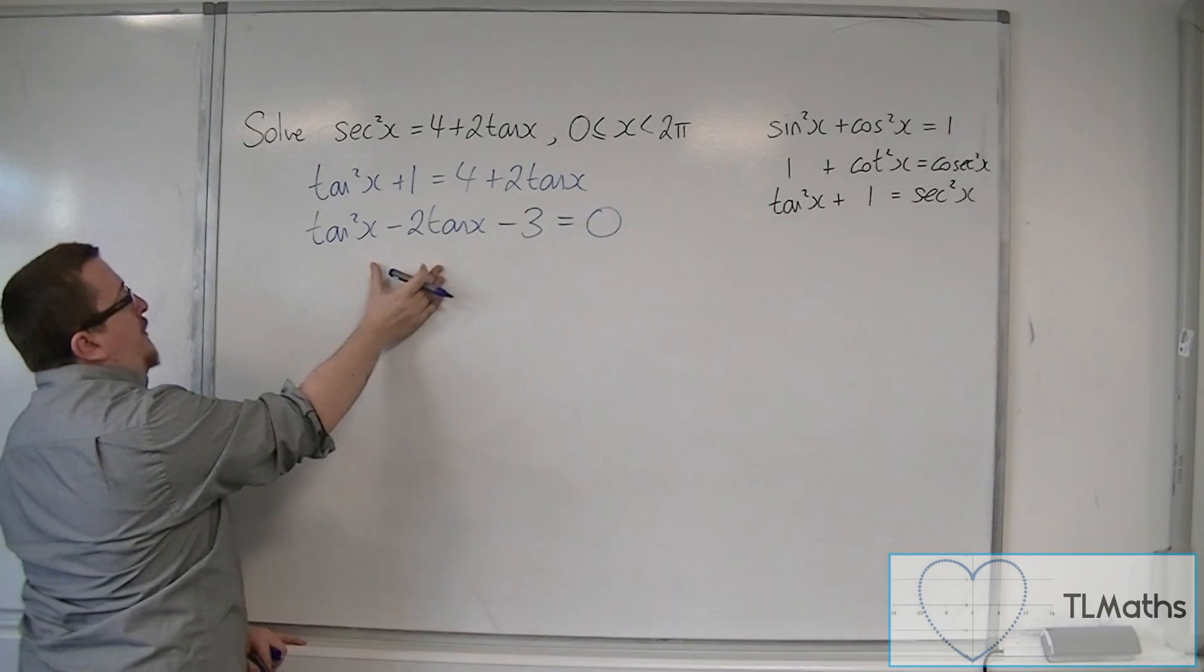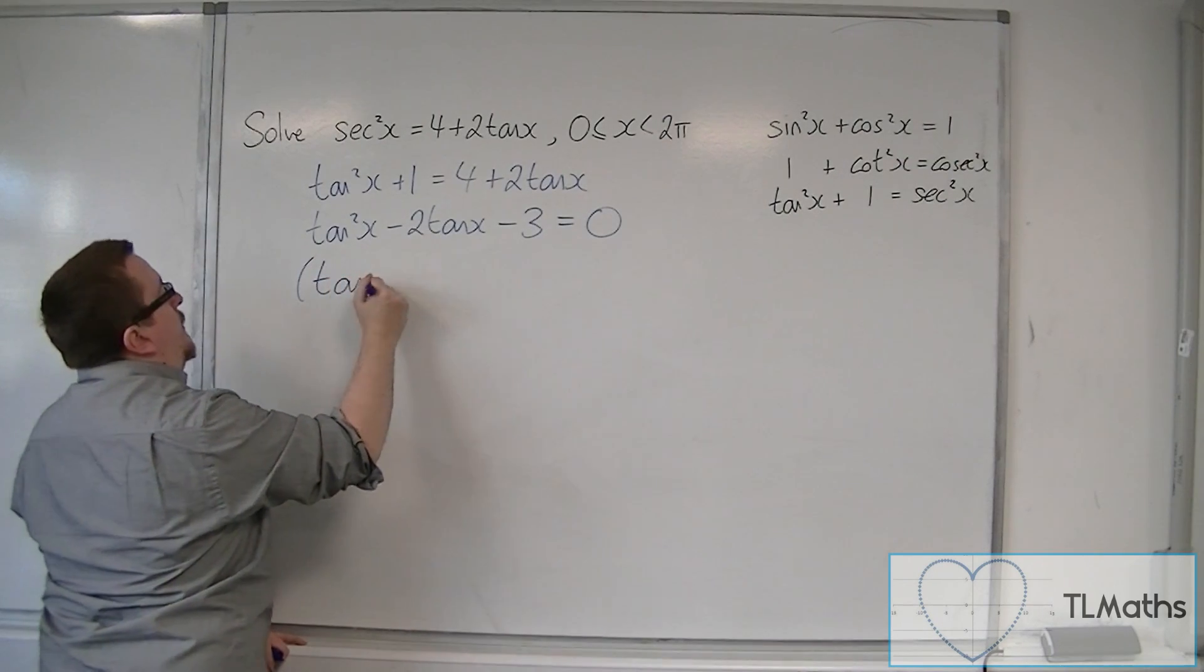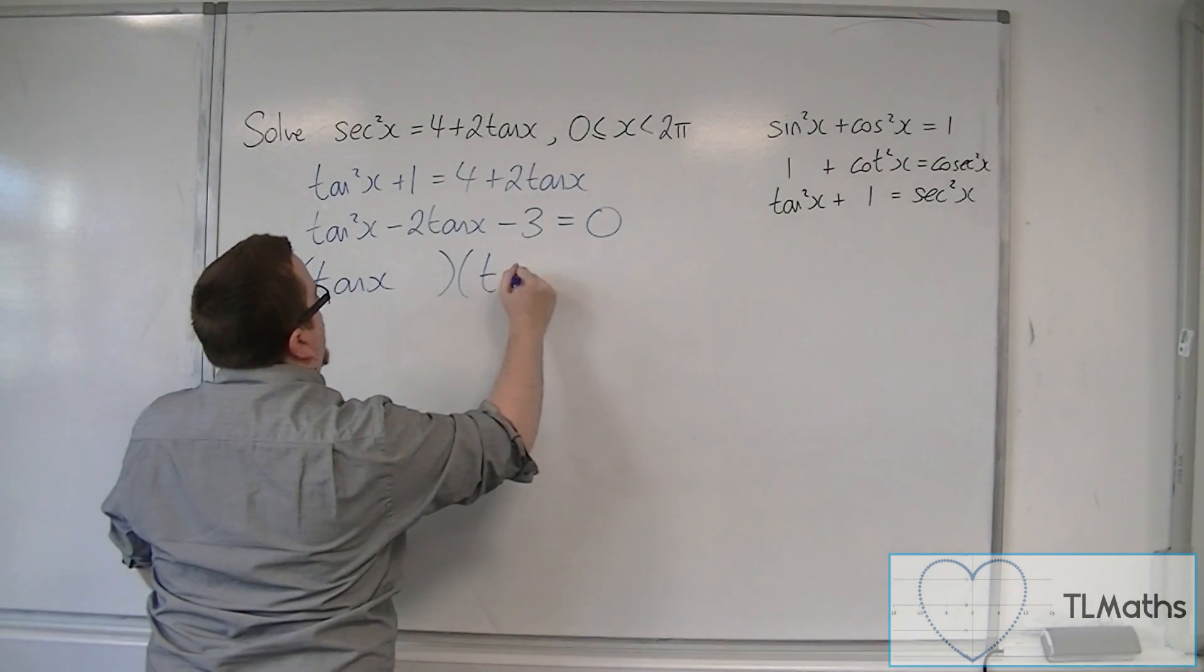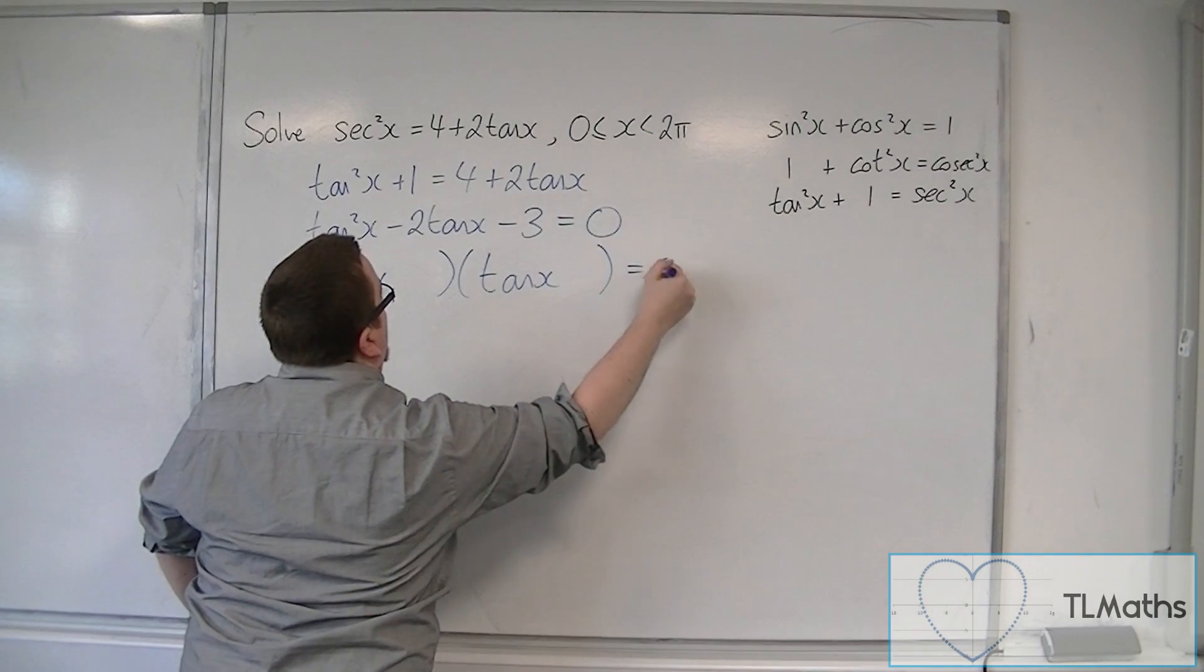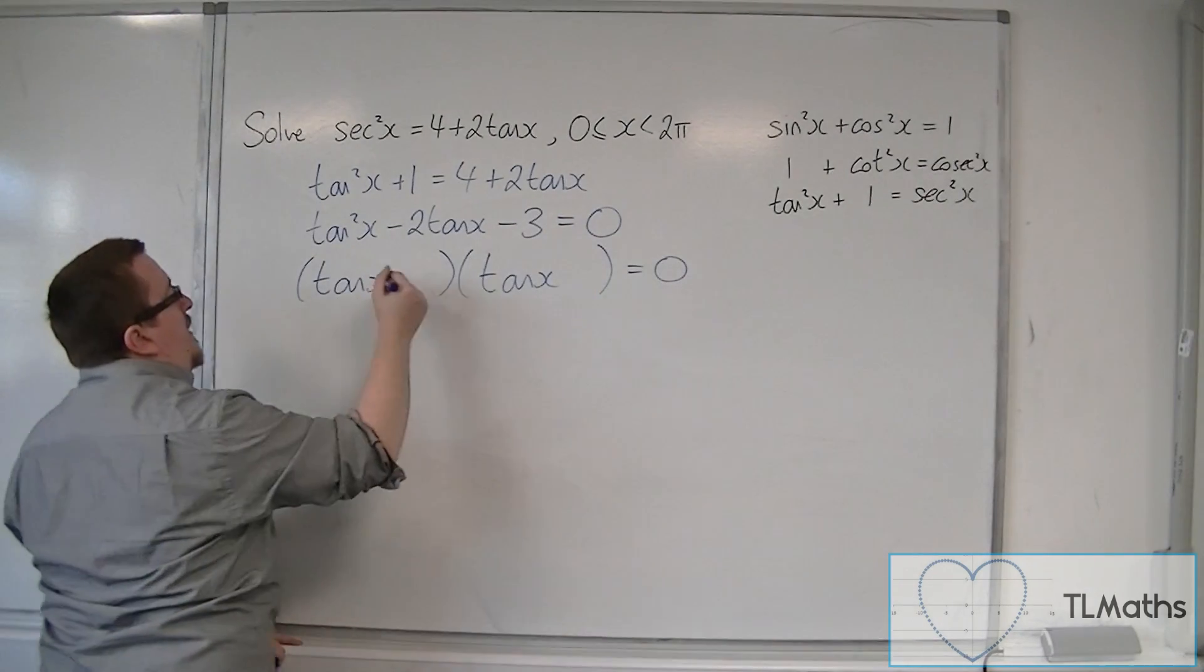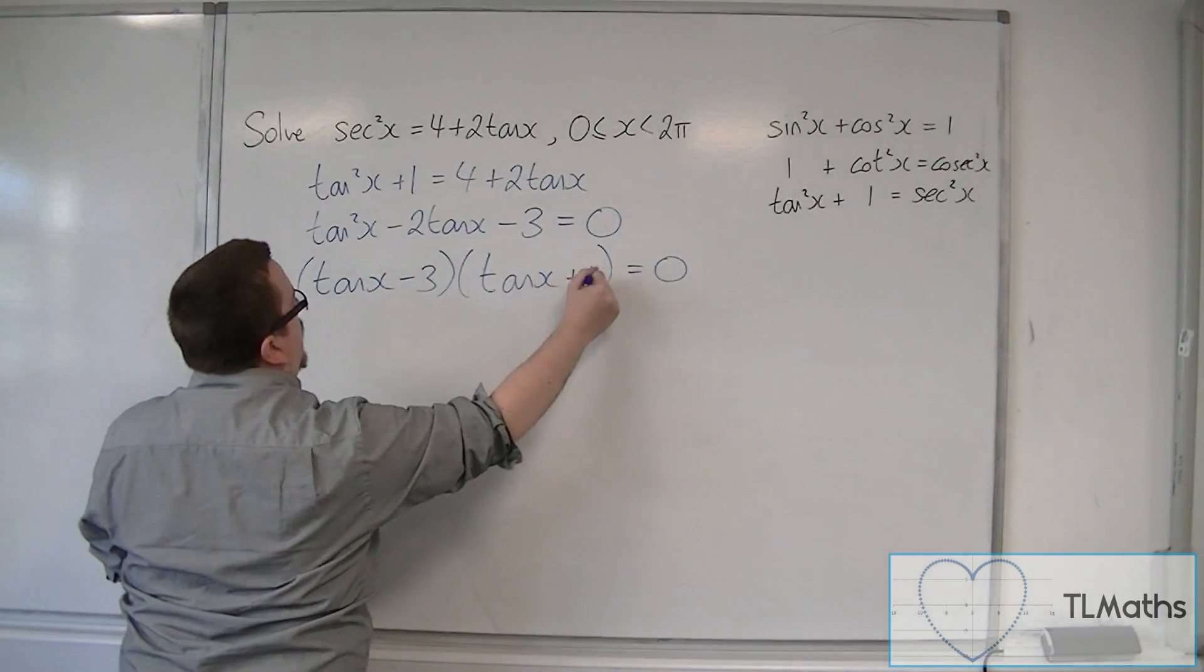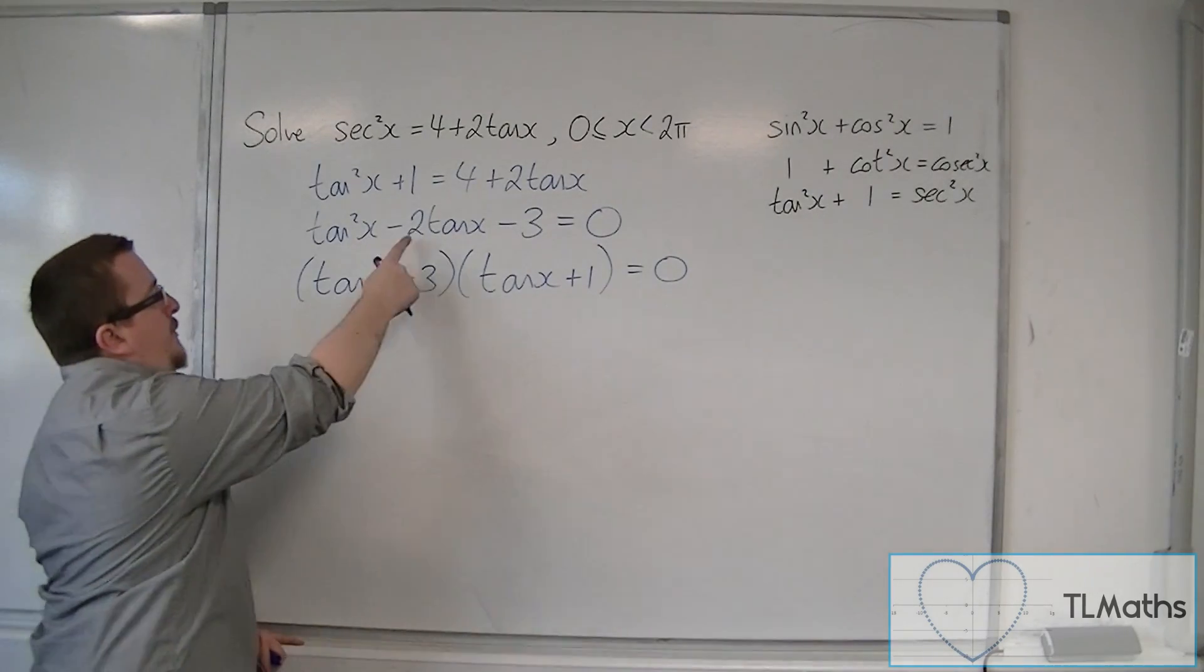Now, with this equation here, we should be able to factorise it. So tan x, tan x. So we're going to have minus 3 and plus 1 in order to get the minus 2 there, the minus 3.